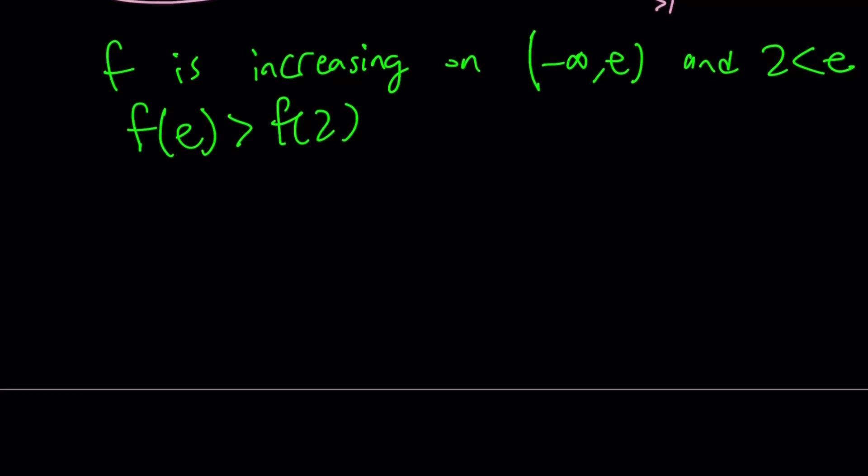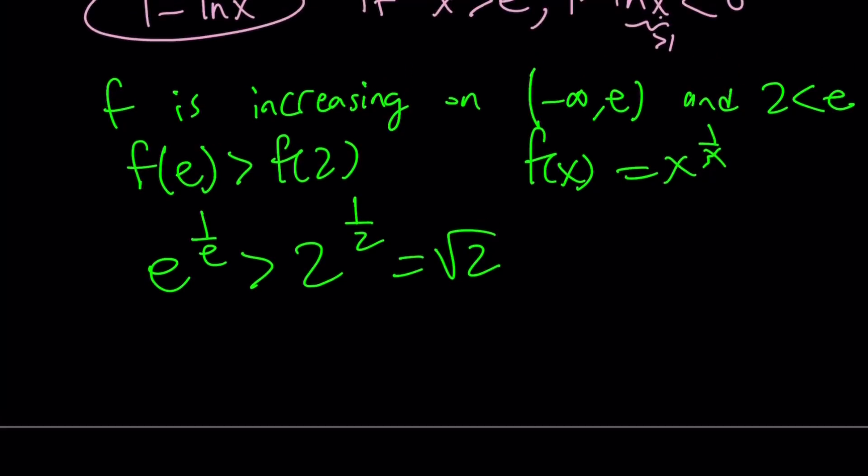But since f of e, and remember our function f of x is x to the power of 1 over x, f of e is going to be e to the power of 1 over e, and it's going to be greater than 2 to the power of 1 half, or you can write it as square root of 2. Wow, that's interesting. Let's go ahead and check out the graph now and you'll get a better picture. Picture. Well, pun intended, I guess.